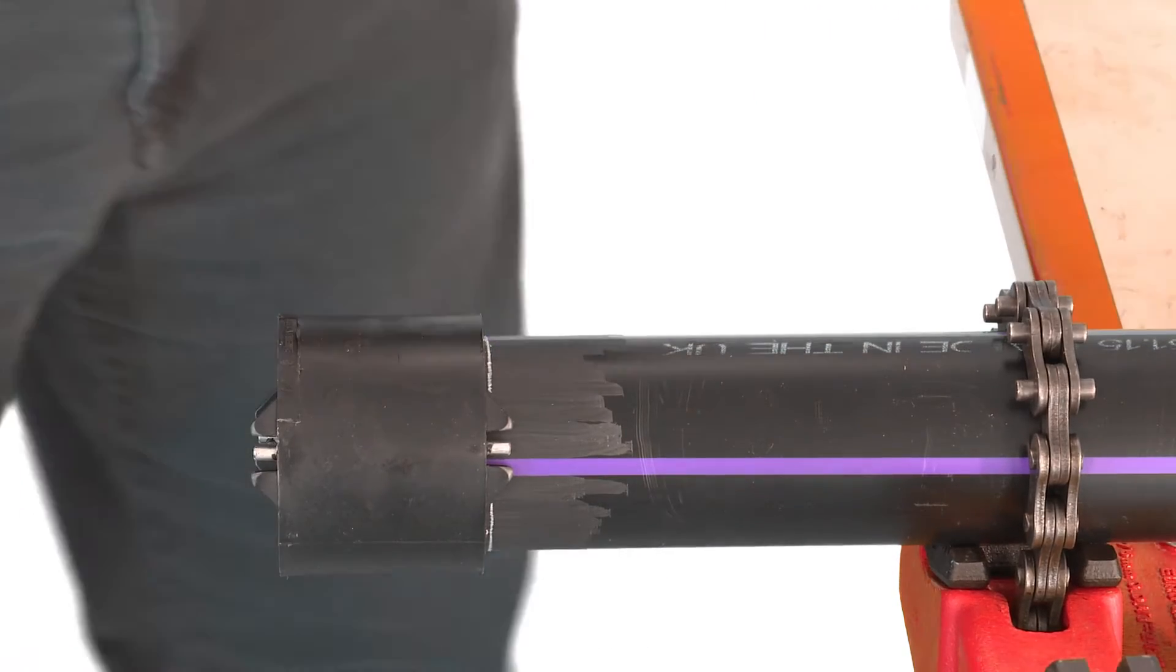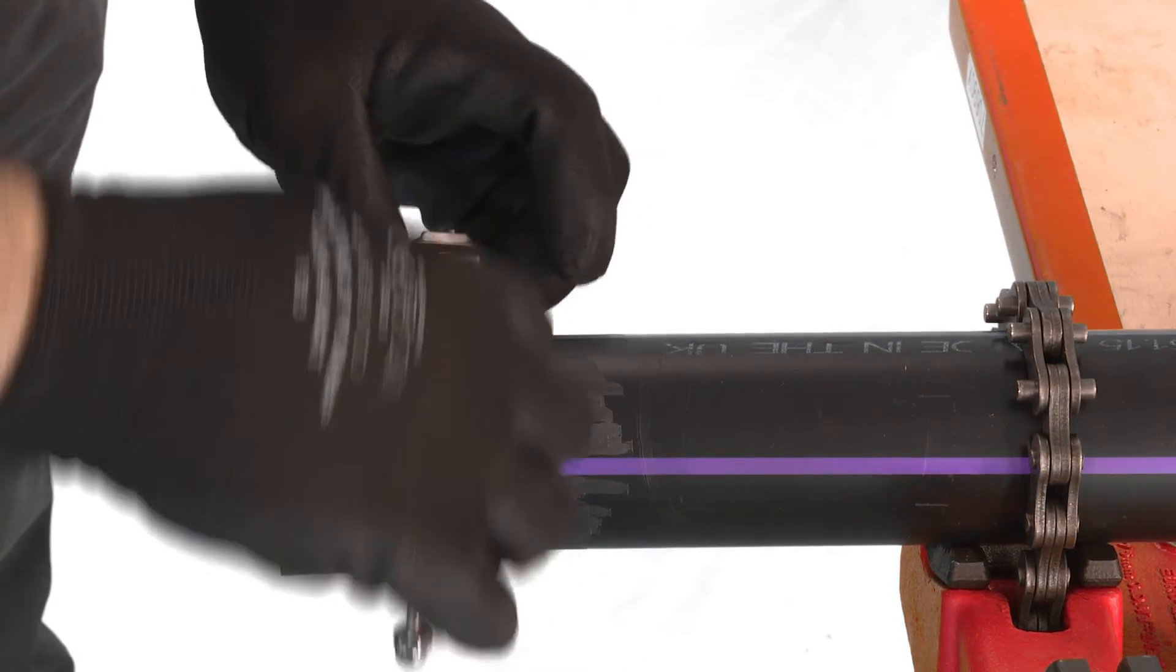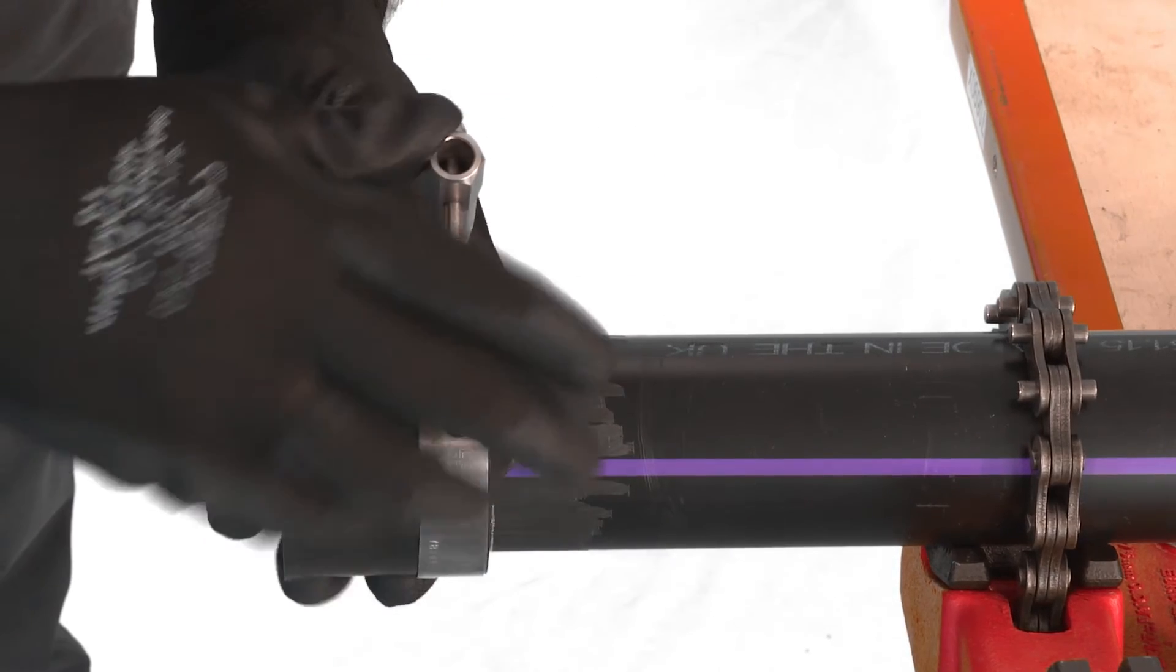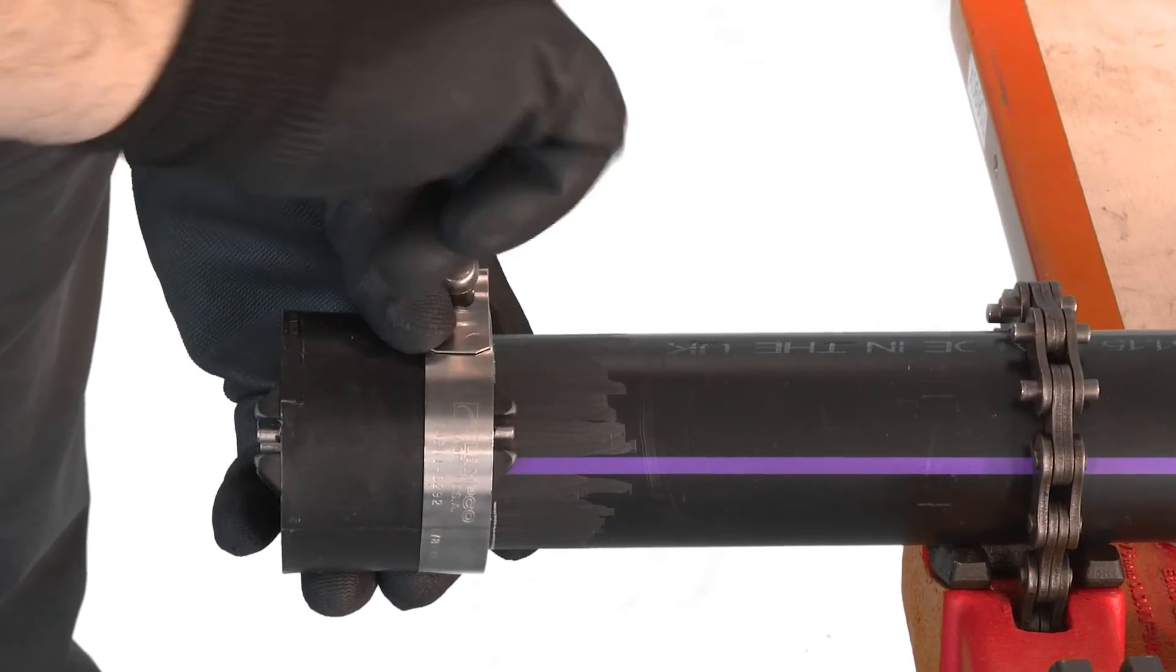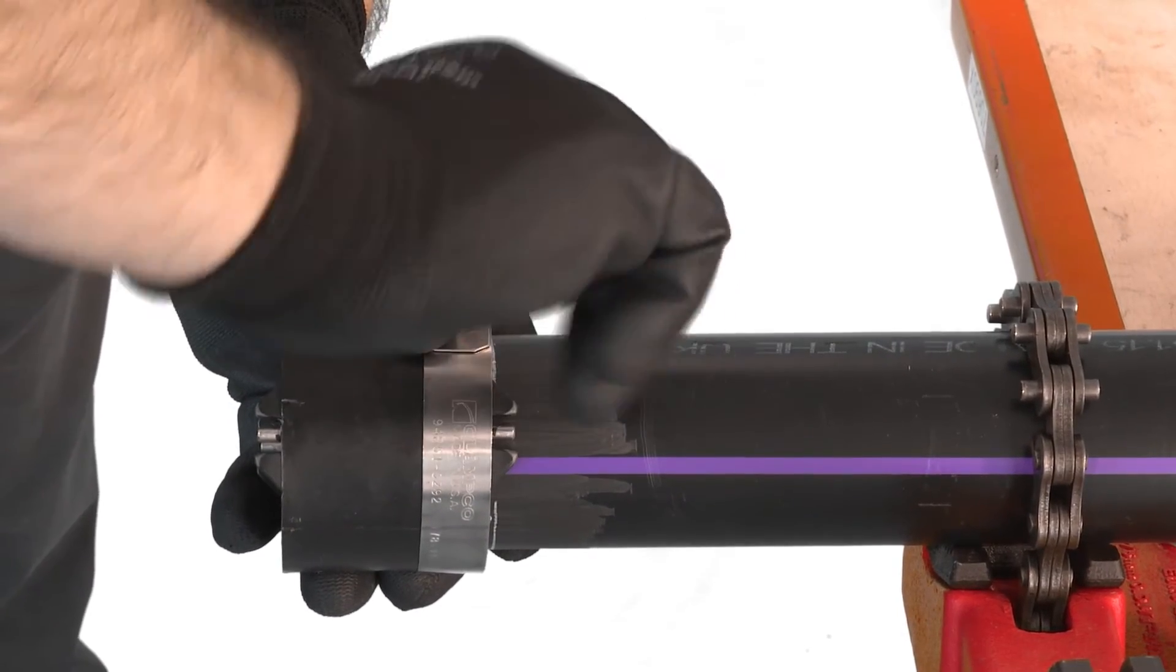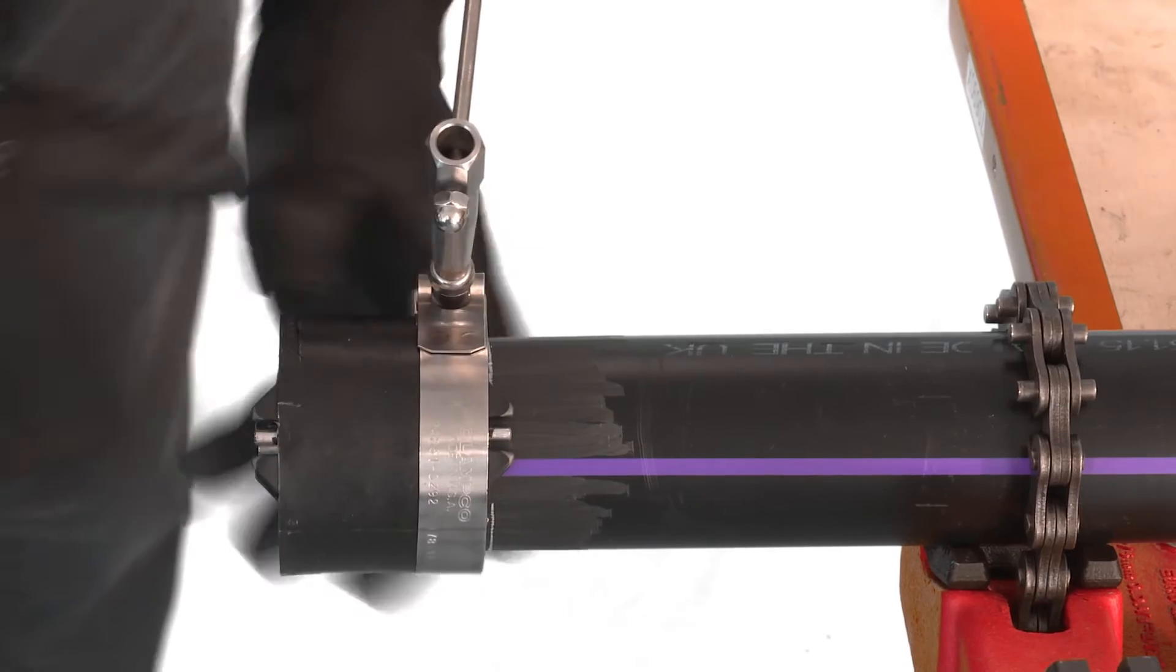Loosely fit the appropriate sized clamp over the hub of the socket and position flush with the end of the socket. Tighten the clamp around the hub. It's important that the clamp is tightened sufficiently to stop pipe rotation in the socket. Do not over-tighten.